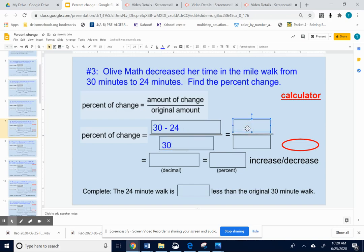Okay, take 30 minus 24 to get 6. For the top, keep 30 on the bottom. We have 6 over 30.